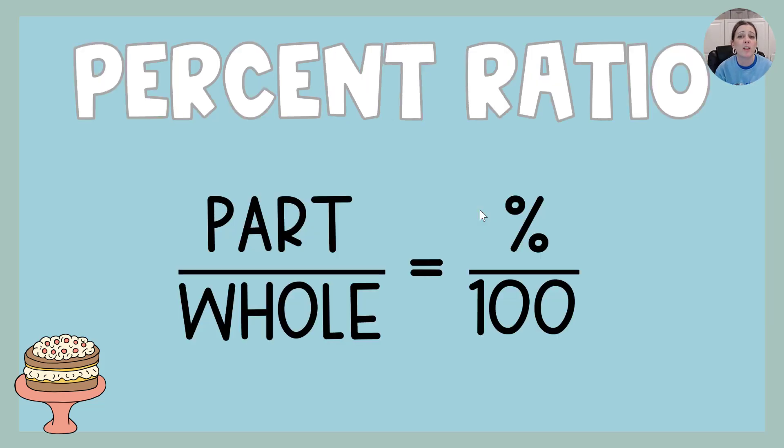So we're going to use equivalent ratios, like the one you see here, to answer and solve some percent problems. The first ratio is part over whole, and then the second ratio is the one that we used in our last video, percent over 100. This is what we're going to need, and we're going to use it over and over.